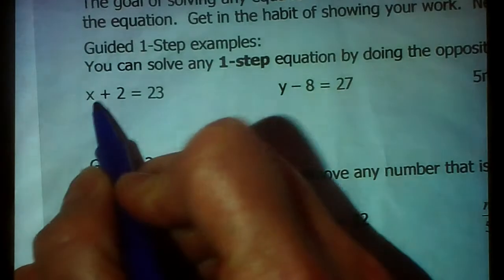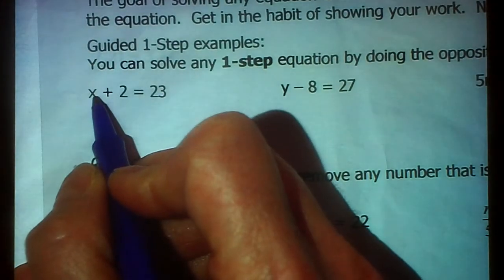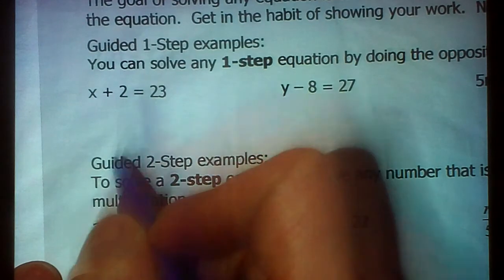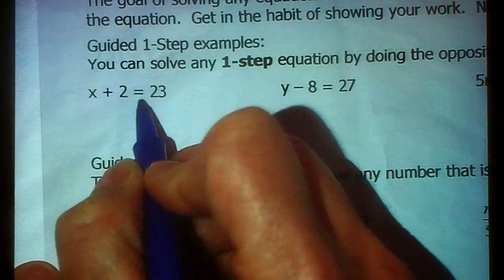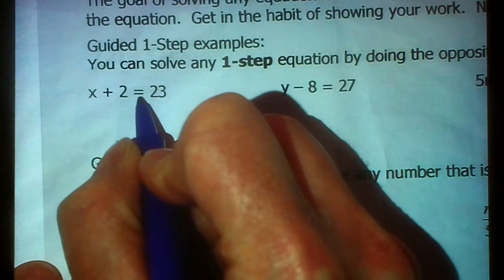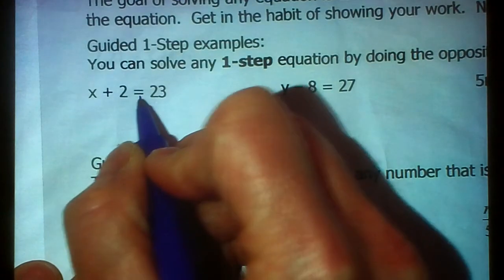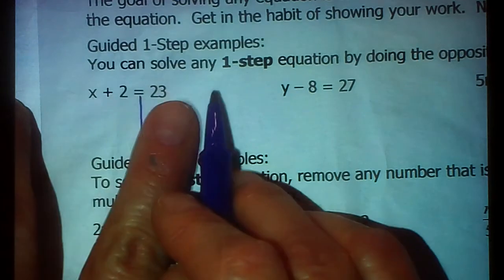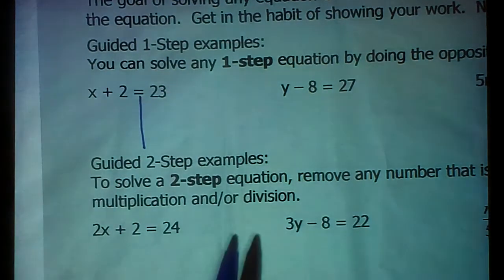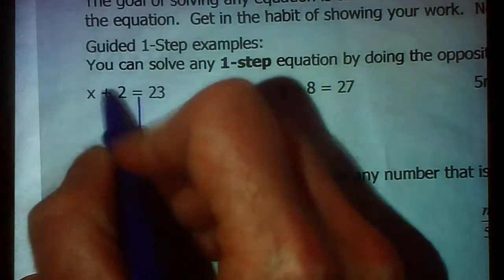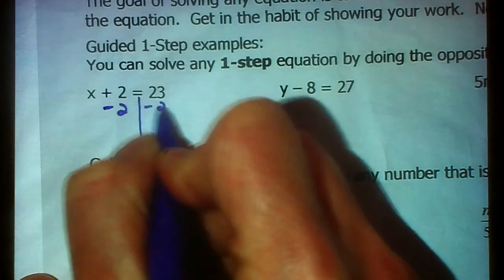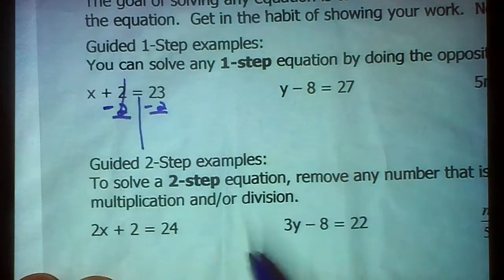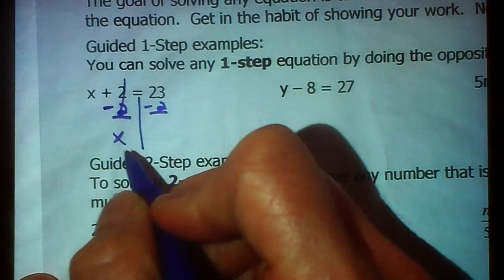Alright, so here's my X. I want to get X alone. That means I want to get rid of this two that's being added to it. The opposite of adding two is subtracting two. Now, I always draw a line down from the equal sign, because whatever you do on this side of the equal sign, you have to do on that side of the equal sign as well, so that it stays balanced. So the opposite of adding two, we're going to subtract two from each side, and when you have two minus two, that of course is zero. X is left all alone.